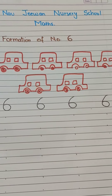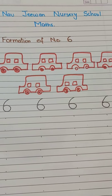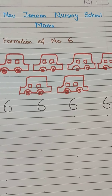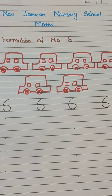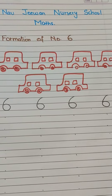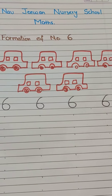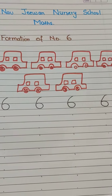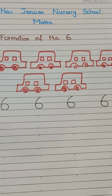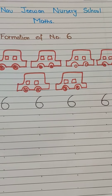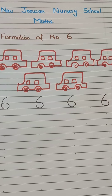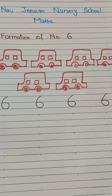As we have already done numbers 1 to 5, we know how to make number 1, 2, 3, 4, 5. So now it's the turn of number 6.